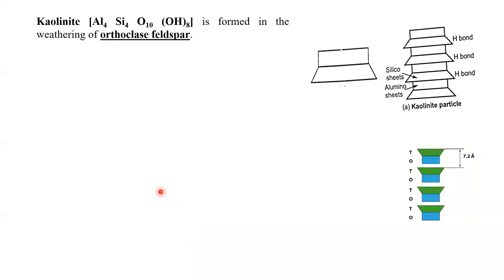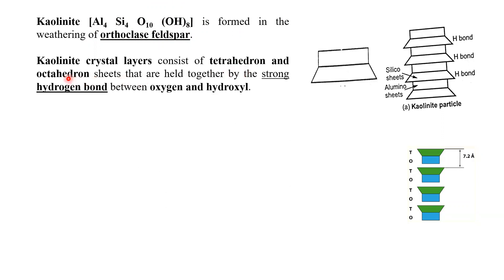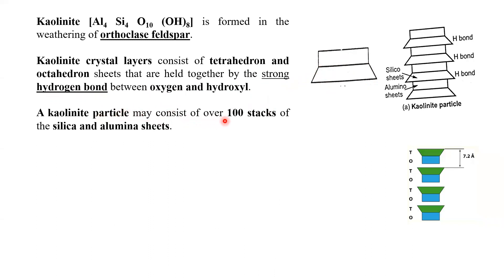The kaolinite mineral's formula includes aluminum, silica, oxygens, and OH. It is formed from the weathering of orthoclase feldspar. Kaolinite crystal layers consist of a silica tetrahedron sheet and an aluminum octahedron sheet joined together by hydrogen bonds to form a stack. A kaolinite particle may consist of 100 stacks.